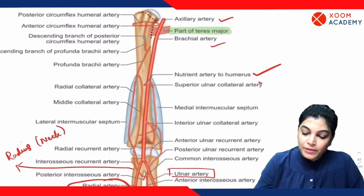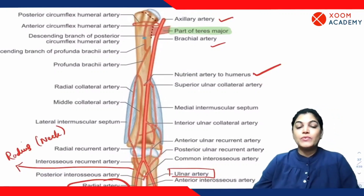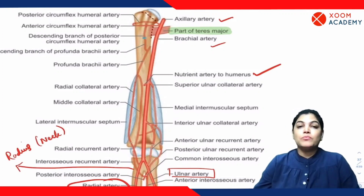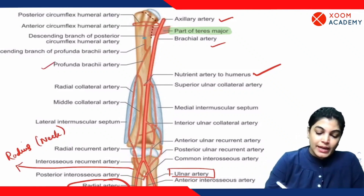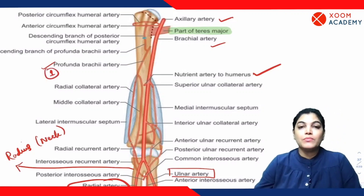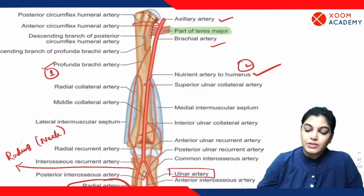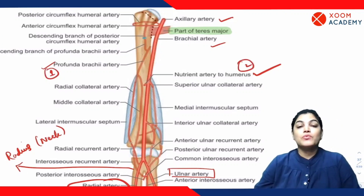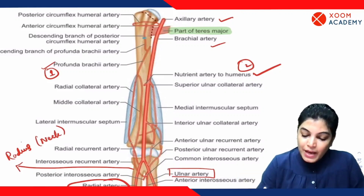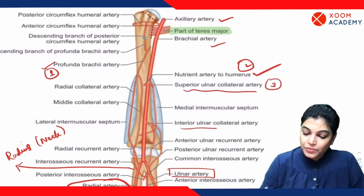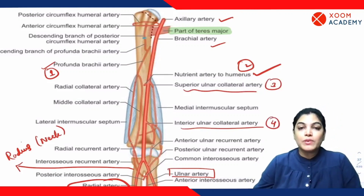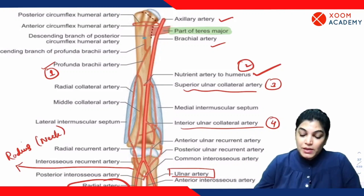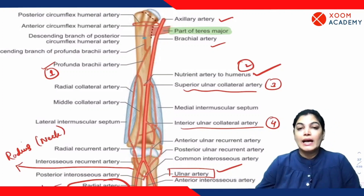Most of the time, the nutrient artery to the humerus bone is given by the profunda brachial artery, which is one of the most important branches from the brachial artery, given posterolaterally. Other branches include the superior ulnar collateral artery, the inferior ulnar collateral artery, muscular branches supplying neighboring muscles, and the two terminal branches: the radial and ulnar arteries.